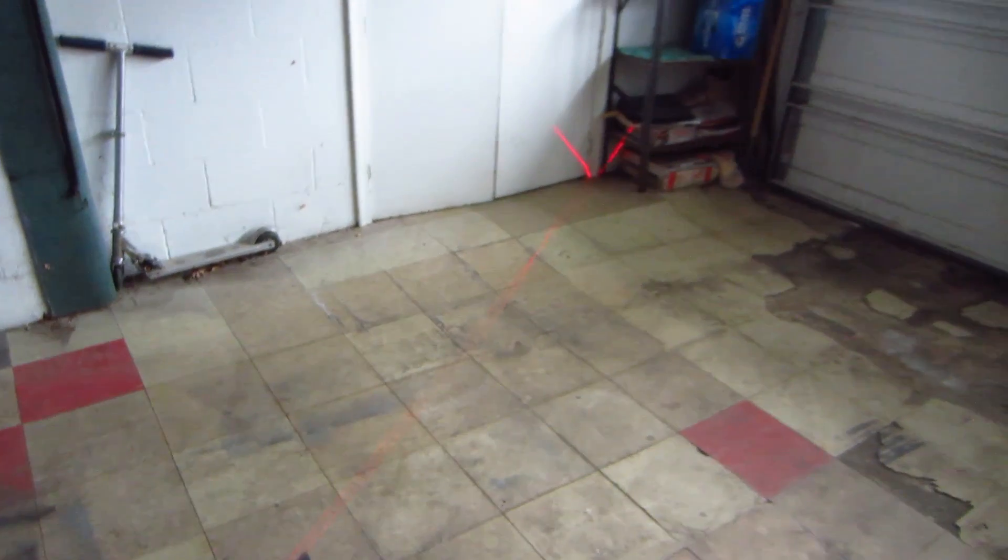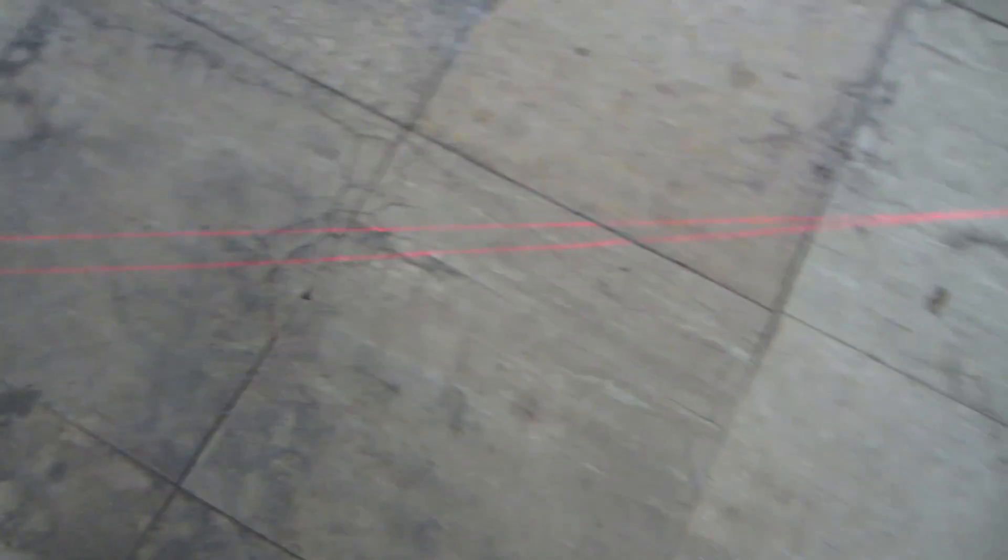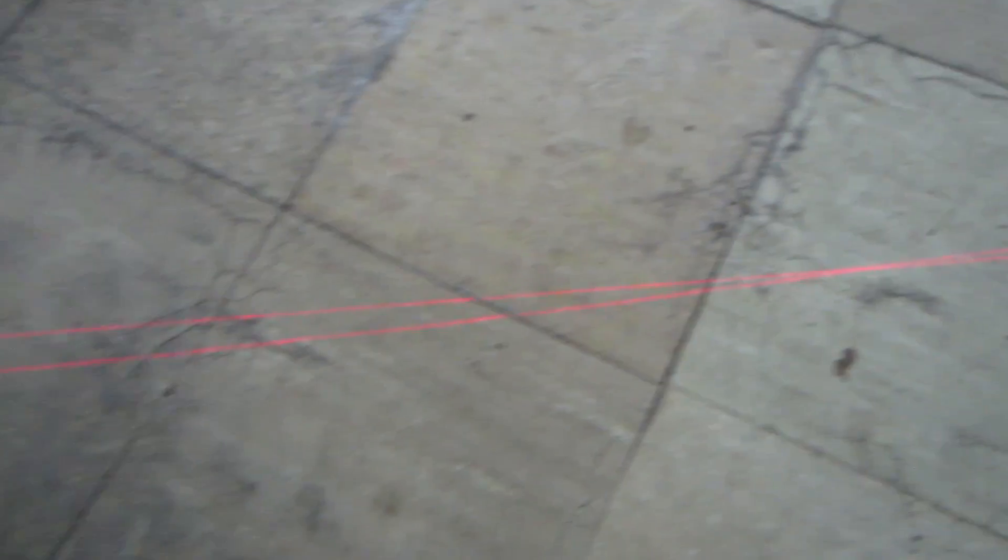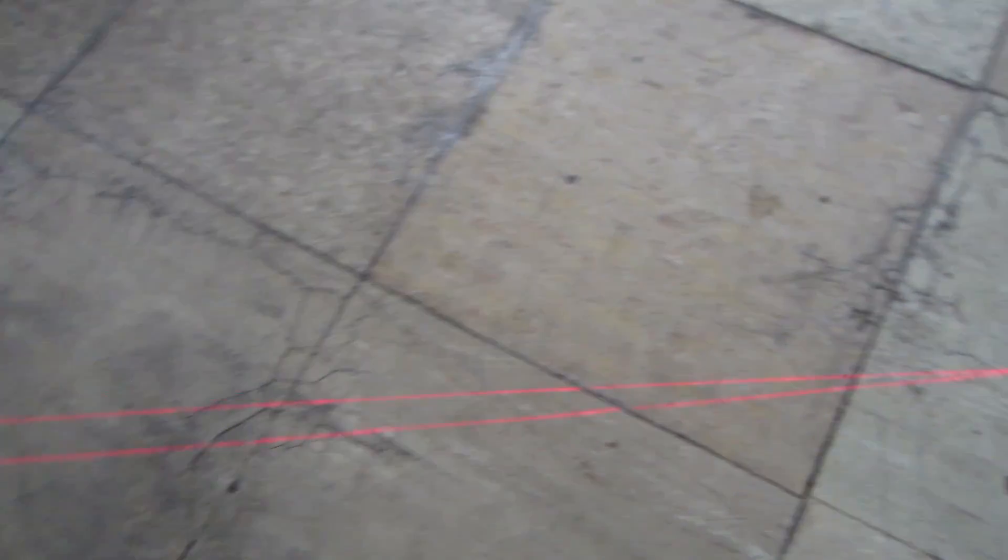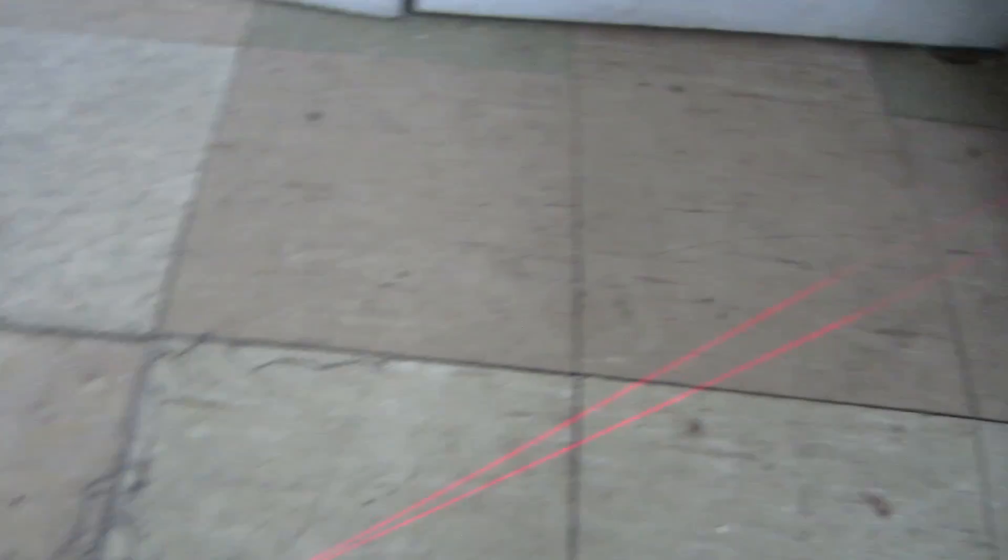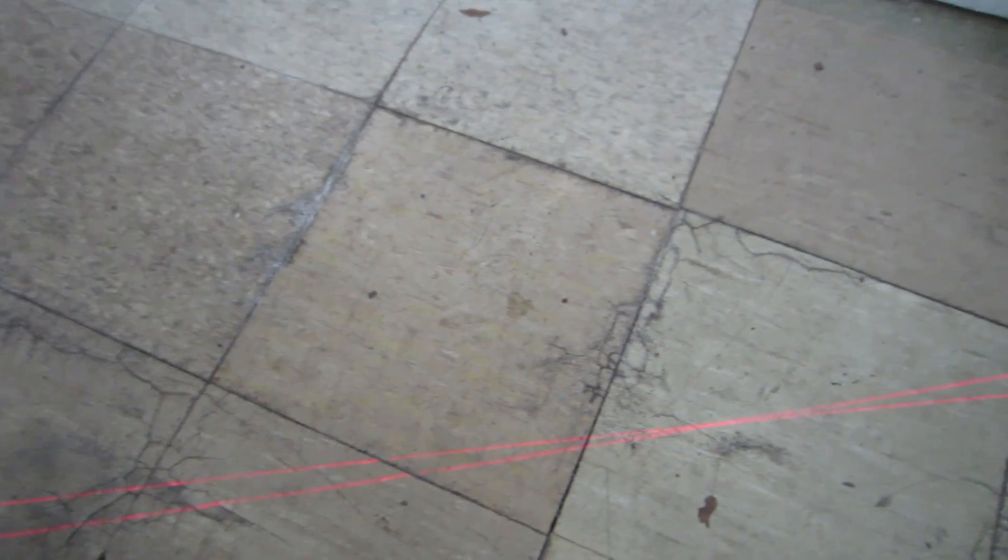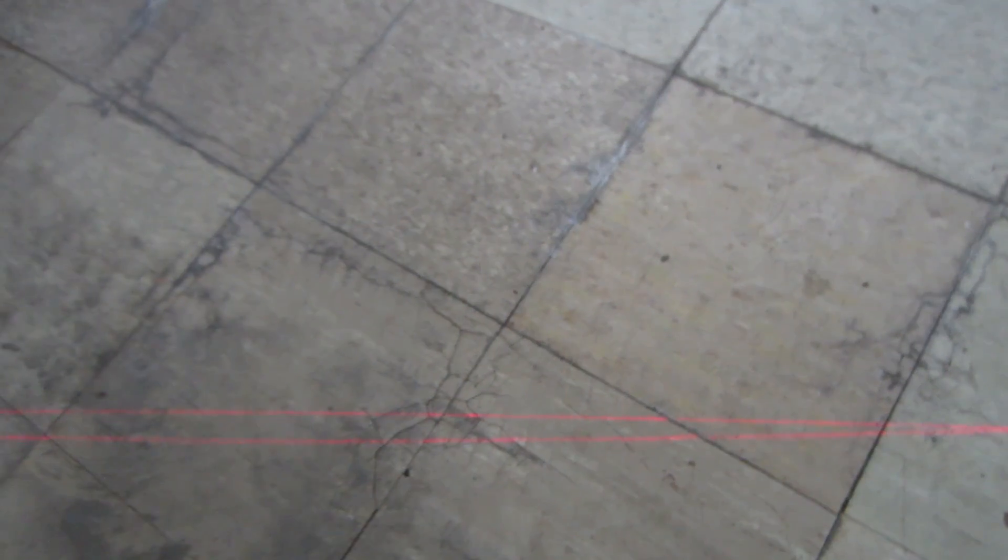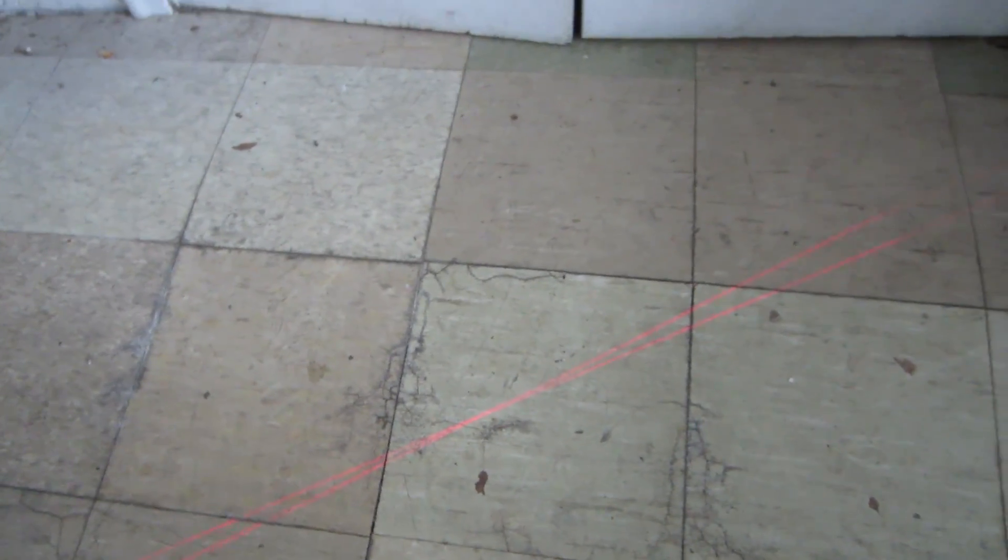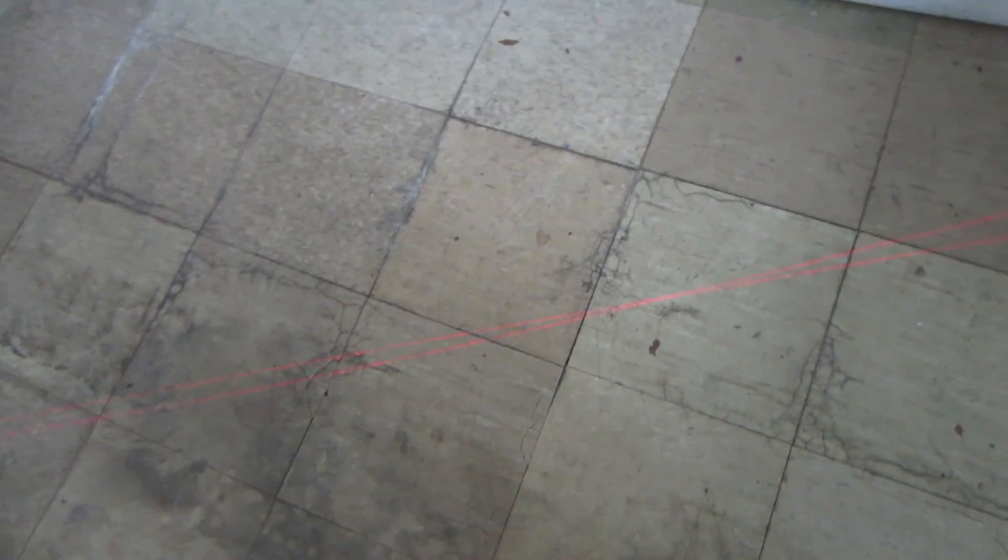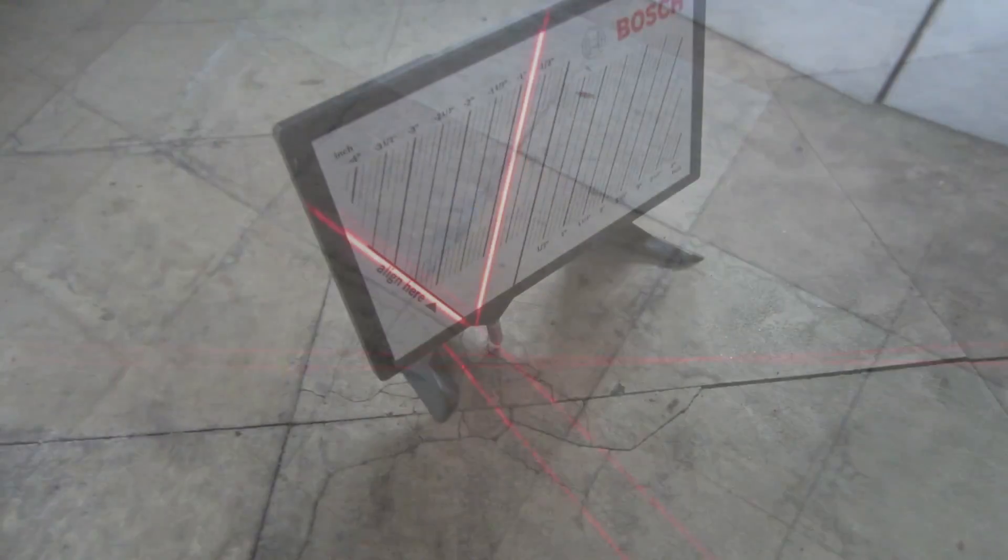So now I'm going to use the measuring plate so we can see how that works. So here, you can see that the lines intersect. They come apart, they cross over, and then they separate again. So what that means is this side of the floor is lower, and this side of the floor is higher. And I'm going to use the measuring tool here to see what the difference in height is.